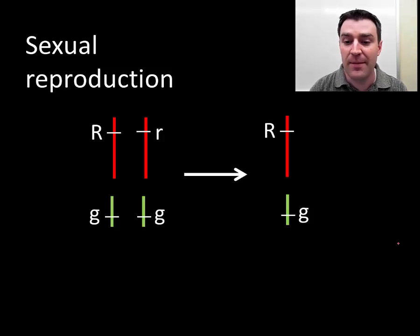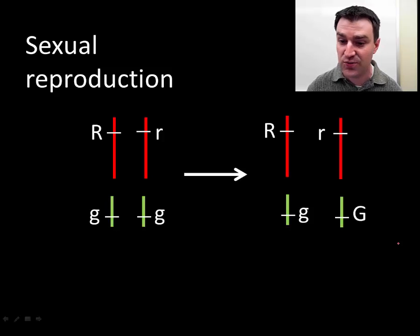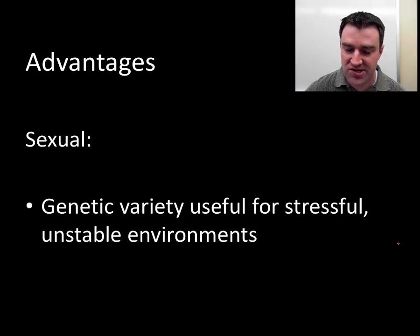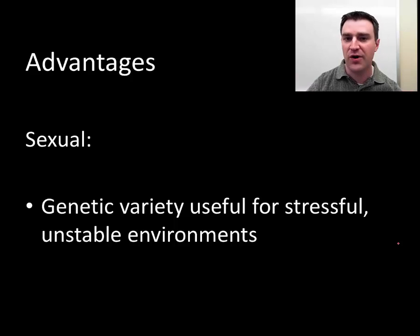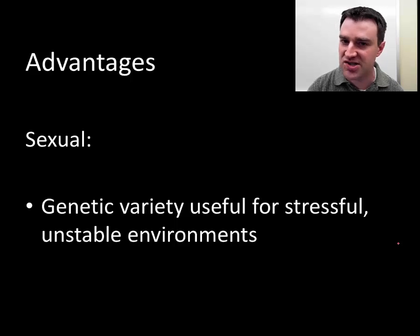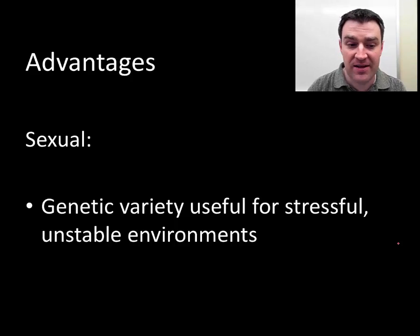Maybe in this particular reproductive cell, this parent passed on the chromosome with the big R version of the gene, but if that parent were to produce other reproductive cells, they could easily pass on the little r version. If they reproduce with another parent who has other versions of those genes, there can be quite a lot of variety in that new offspring — genes very different from either parent. That really is the major advantage of sexual reproduction: to generate genetic variety in offspring, which is the crucial necessity for evolution of species over generations.